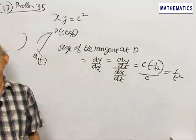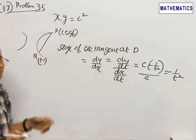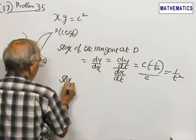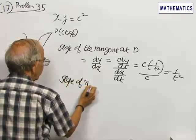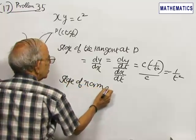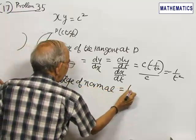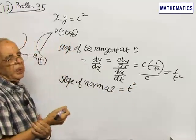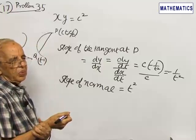Since tangent and normal are perpendicular to each other, slope of normal is equal to T squared, since M1 M2 equals minus 1.